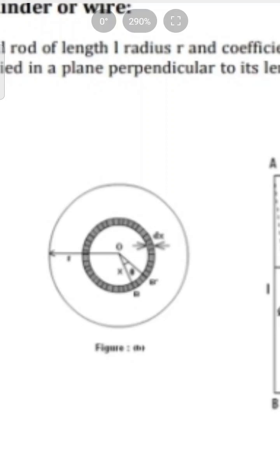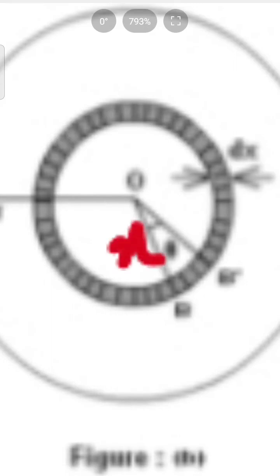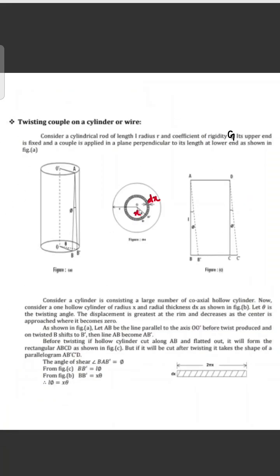This is x, and the thickness is dx. The upper part is round in shape. Let theta be the twisting angle.